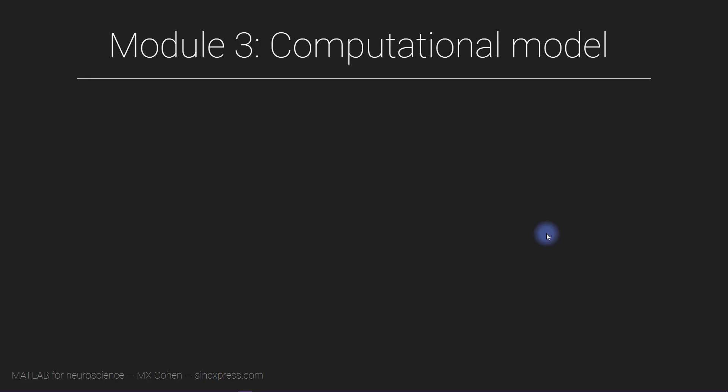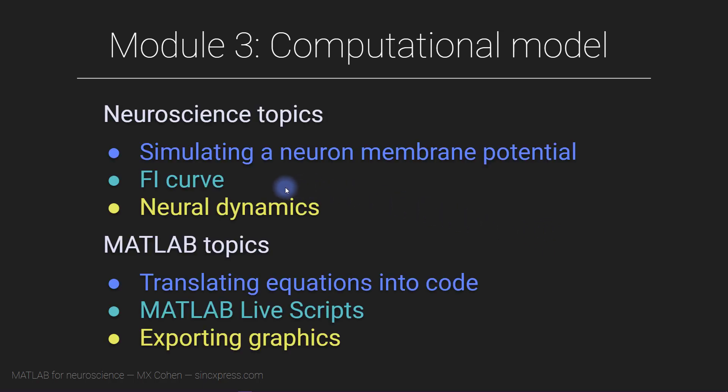In this module, we are going to build and experiment with a computational model. You will learn about the field of computational neuroscience and some important methods when simulating data, and you'll also gain more experience translating mathematical equations into code. This is a really important skill for any kind of scientific programming, not only computational neuroscience.